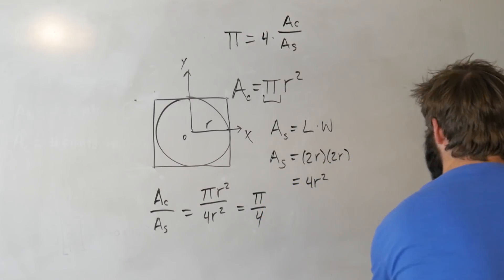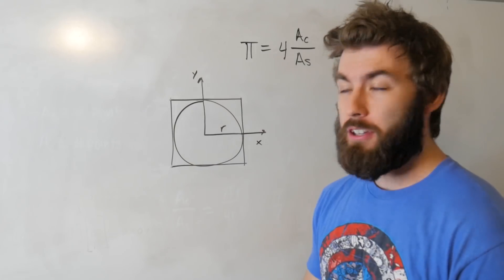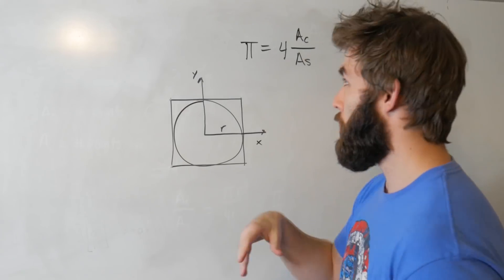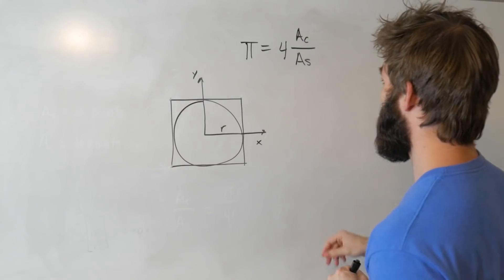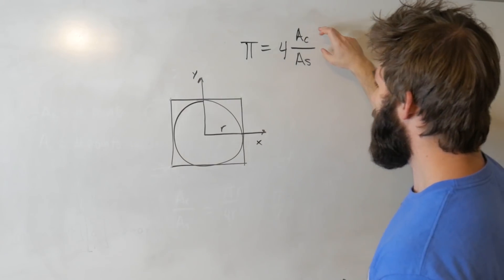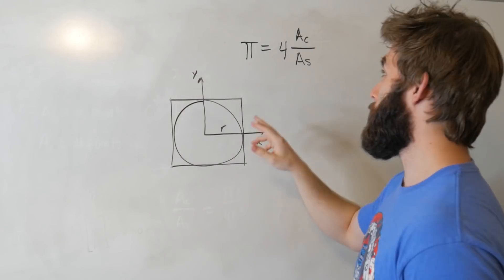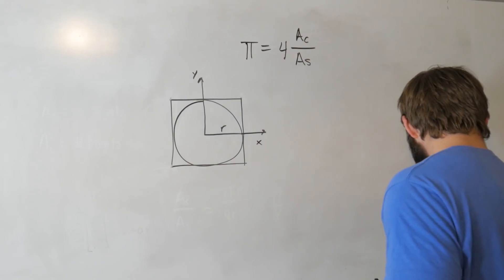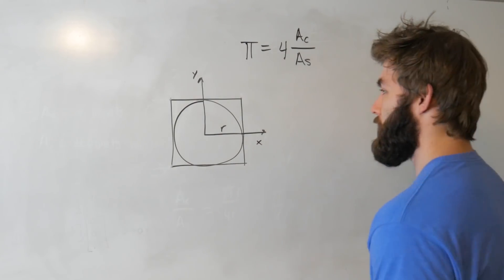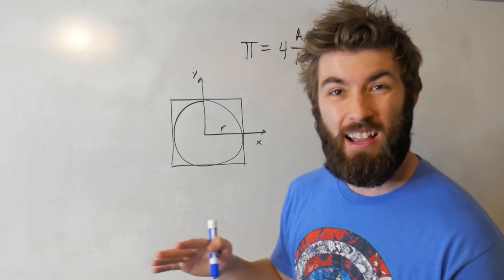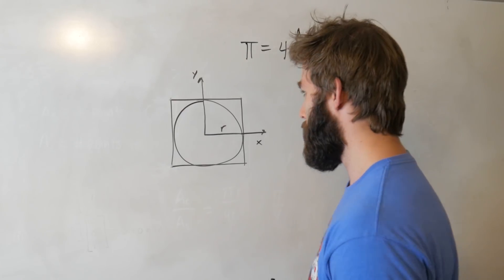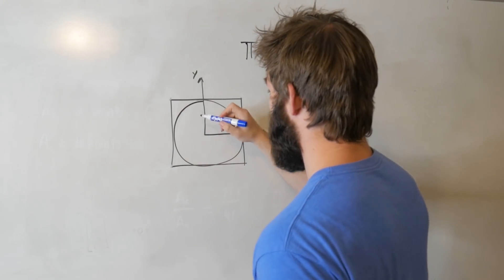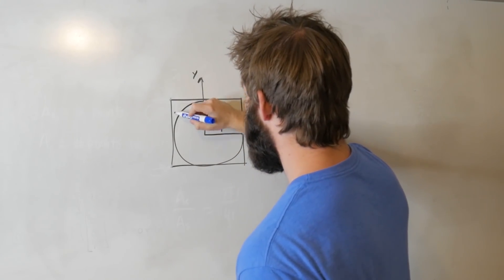That doesn't look too helpful yet. But what we need to do if we want to tackle this approximating pi dilemma is we have to define our measuring stick that we're using to define areas. And to do that, we need to discretize our space. This is what we need to do numerically if we're going to be using computers to solve this.